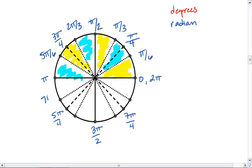Then we get 7π sixths, 4π thirds, 5π thirds, followed by 11π sixths.